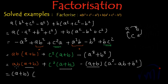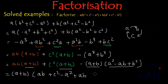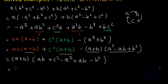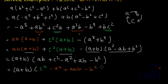Taking A plus B common, inside the bracket we have AB plus C squared. Then distributing the minus into the remaining bracket gives minus A squared plus AB minus B squared. Now combining: C squared minus A squared plus 2AB minus B squared.